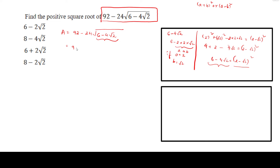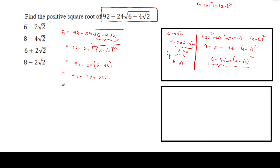So our next step is the square root of 92 minus 24 times 2 minus root 2 whole square. The square root gets cancelled, giving 92 minus 24 times 2 minus root 2. Multiplying out: 92 minus 48 plus 24 root 2, which is nothing but 44 plus 24 root 2.